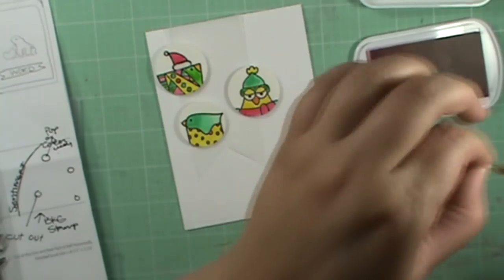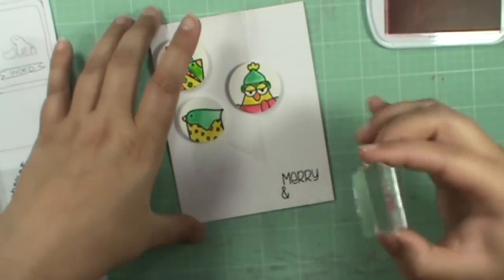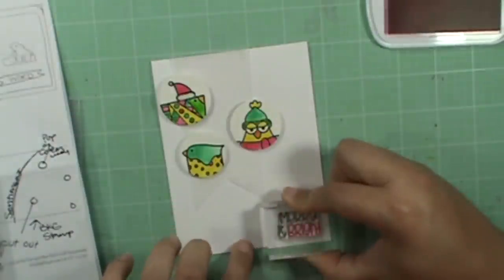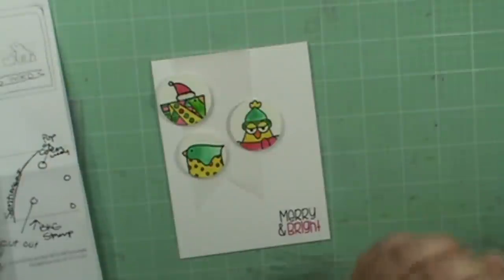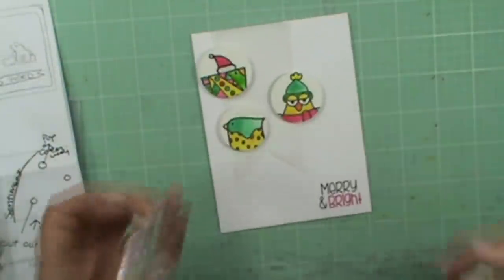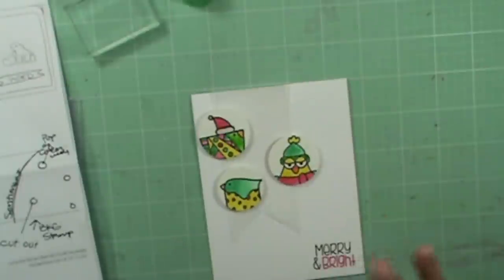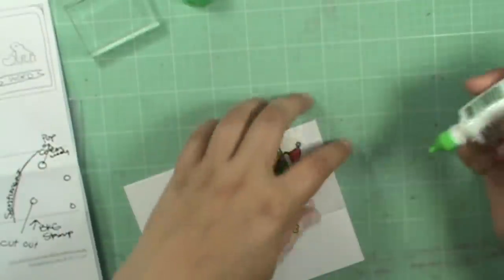Take off that washi tape and then line this up. Sorry if my head gets in the way. And there we have the merry and bright sentiment. Now I feel like it just needs something a little bit extra. This is not stuck down up here with the glue.